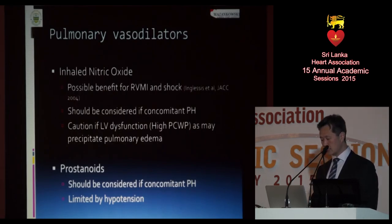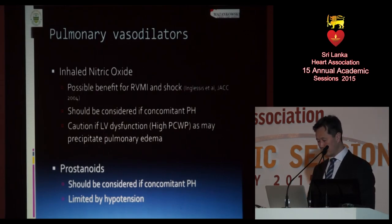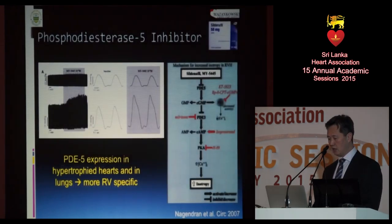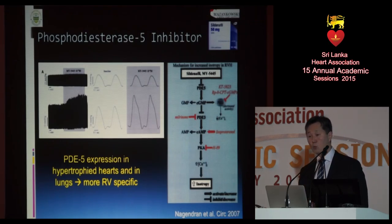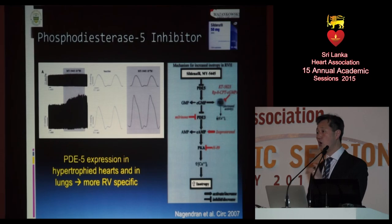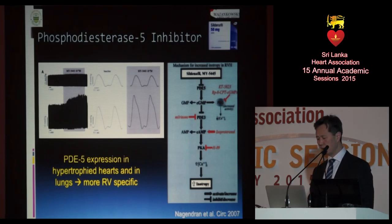Pulmonary vasodilators — inhaled nitric oxide is used often. It can be delivered non-invasively with just a mask, without intubation. We primarily use it in pulmonary hypertension, but increasingly in patients with right ventricular myocardial infarction and shock, where there is some evidence it may be beneficial. Our group does a lot of work with PDE5 inhibitors — sildenafil — and we have found RV contractility benefits in patients with RV hypertrophy, commonly seen in pulmonary hypertension, leading us to use this much more frequently in our population.